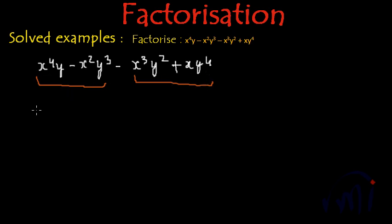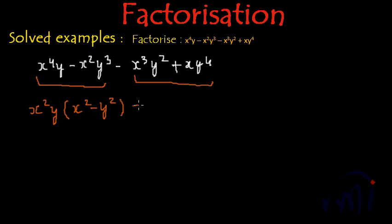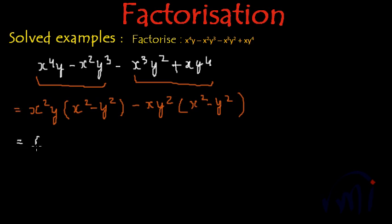From the first two terms we can take x squared y as common, and inside the bracket we will have x squared minus y squared. And from the next two terms I am going to take minus xy squared as common, and inside the bracket we will have x squared minus y squared again. From here we can take x squared minus y squared as common.